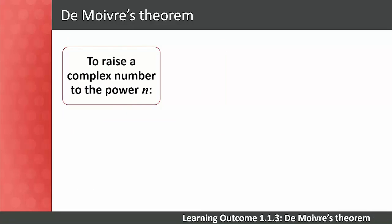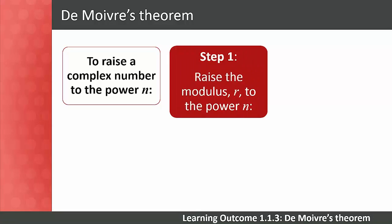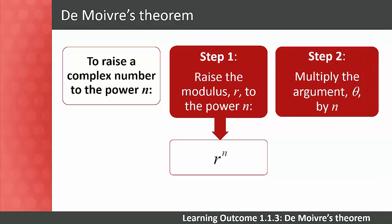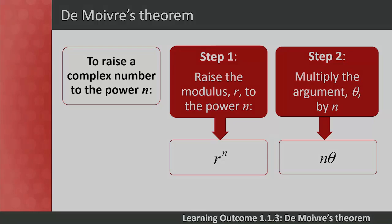Let's look at the steps we take to raise a complex number to the power of n. Step 1: raise the modulus r to the power of n. This gives us r to the power of n. Step 2: multiply the argument theta by n. This gives us n theta. Let's now view a simple video example to start us off, followed by a slightly more difficult one.